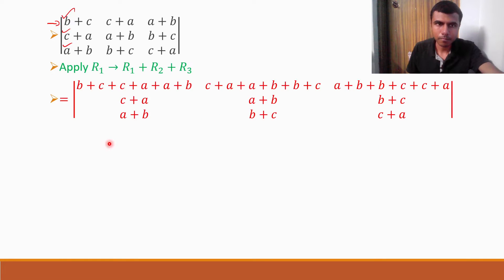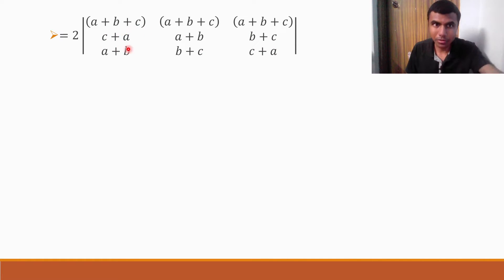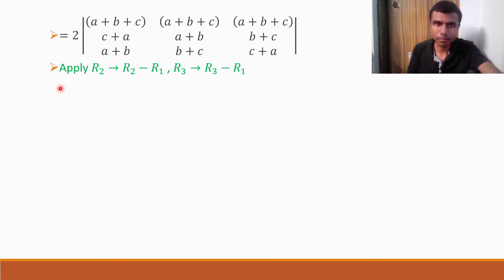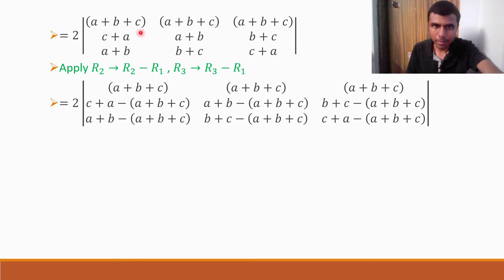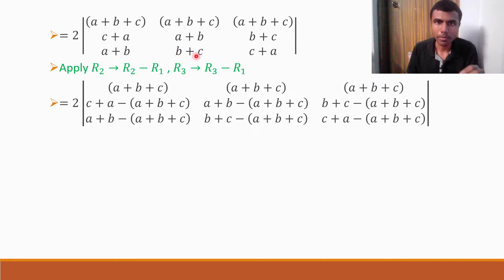How I'm going to achieve it: you see there is C plus A in the second row. If I subtract R1 from R2 — that is R2 implies R2 minus R1 — I get C plus A minus of A plus B plus C, A plus B minus of A plus B plus C, and B plus C minus of A plus B plus C. Likewise, R3 implies R3 minus R1 gives A plus B minus this, B plus C minus of A plus B plus C, and C plus A minus A. This step is extra — I've put it so you understand the process.